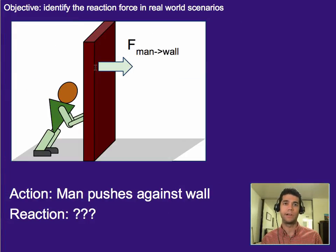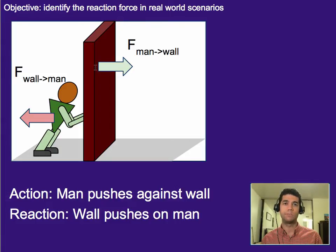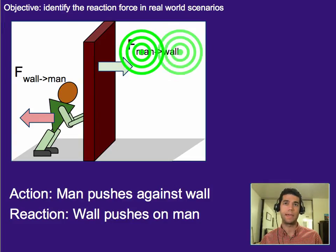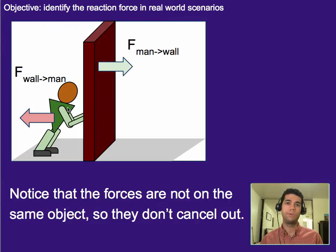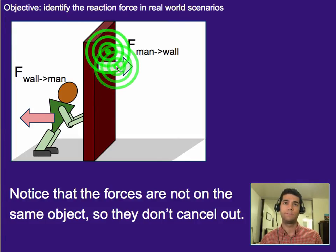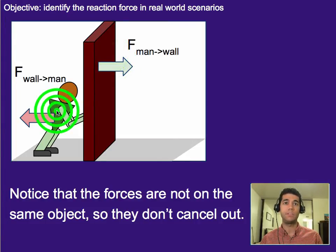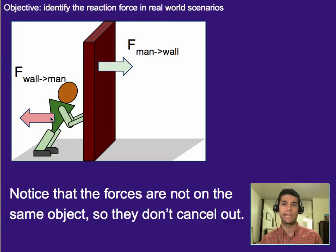All right. Let's think about another scenario. A man pushes against the wall. What is the reaction in this case? All right. Hopefully you got that the reaction force would be if the man pushes on the wall, then the wall pushes on the man in this case. And that is the reaction force. Now, notice that the two forces are on two different things. And this is why they don't cancel out. So one force is on the wall right here, and the other force is on the man. This is why in pushing something, you don't have an action and reaction that cancel each other out, because they're on two different things. And that's why they don't cancel.